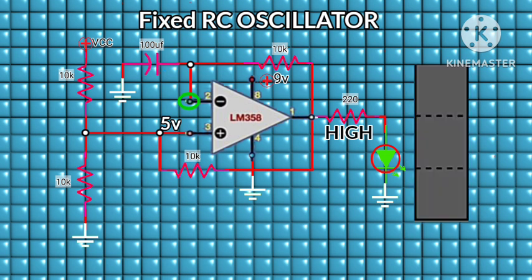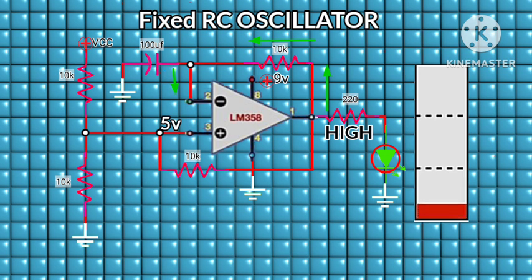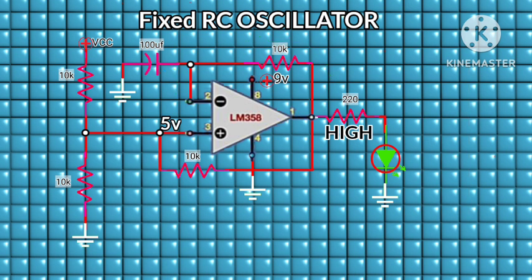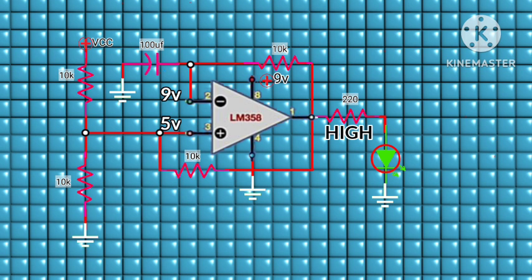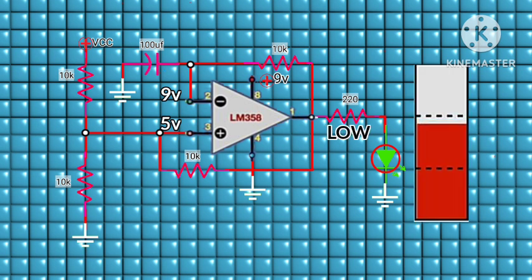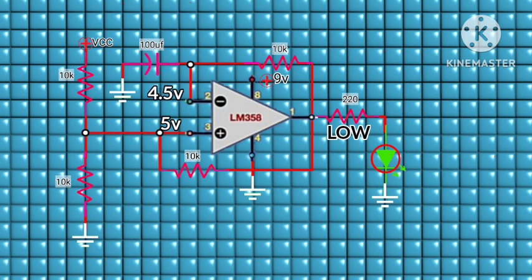So right now the output will remain high because the reference voltage is greater than that of the inverting input. But since the output feeds the resistor and the capacitor, this will charge up the capacitor to the positive supply voltage VCC — 9 volts. Now because this has happened, the voltage at the inverting input is now greater than what we have at the non-inverting input, so the op-amp will compare these voltages and go low until the capacitor discharges itself. Once the voltage at the inverting input is now less than the non-inverting input, the output will go high again.